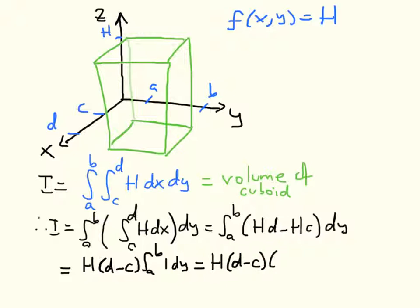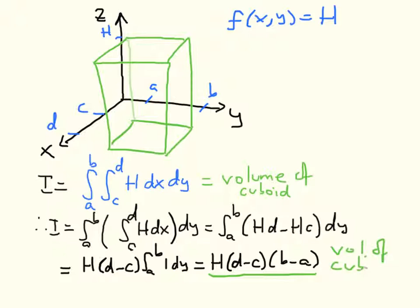Since H(d − c) has no y dependence, it factors out. We get H(d − c) times the integral from a to b of 1 dy, which equals H(d − c)(b − a). This is exactly the volume of a cuboid with height H, side length (d − c) in the x-direction, and side length (b − a) in the y-direction — confirming our interpretation.